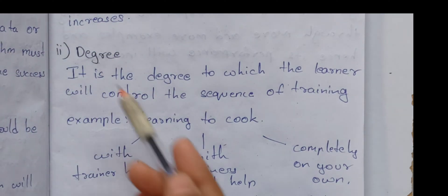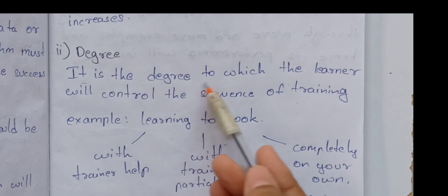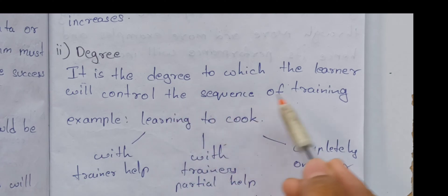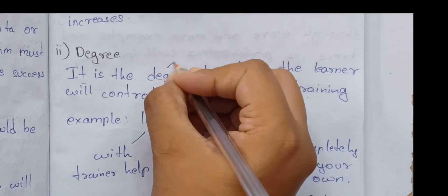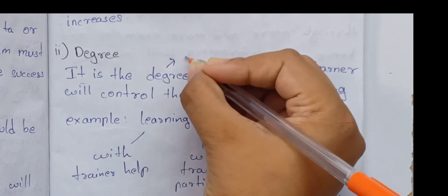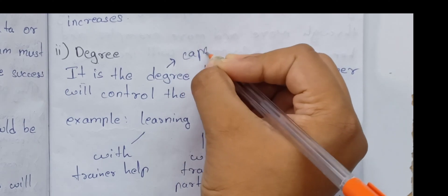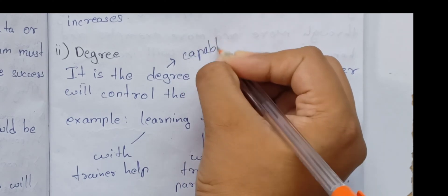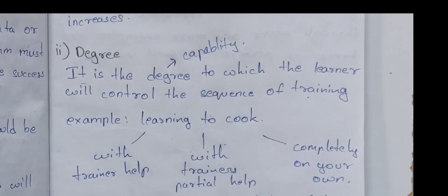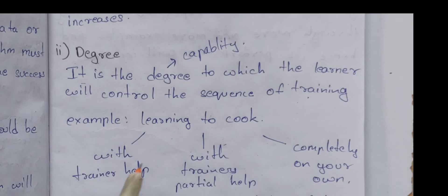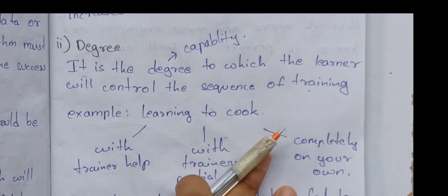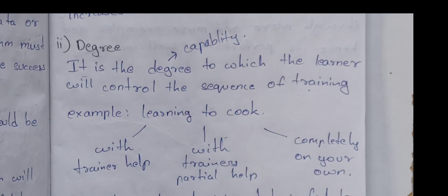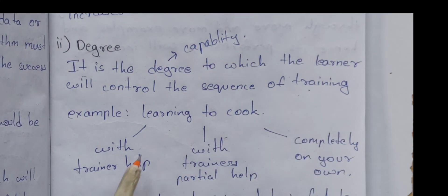Next is degree. It is the degree to which the learner will control the sequence of training. Degree means capability. For example, we will learn cooking.